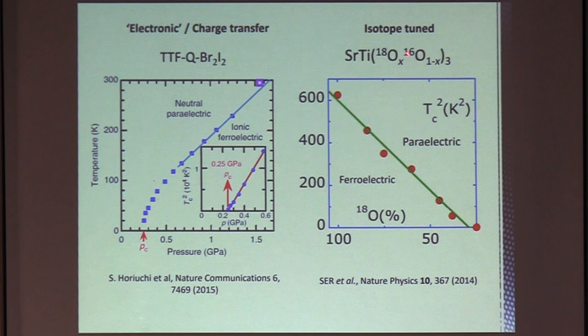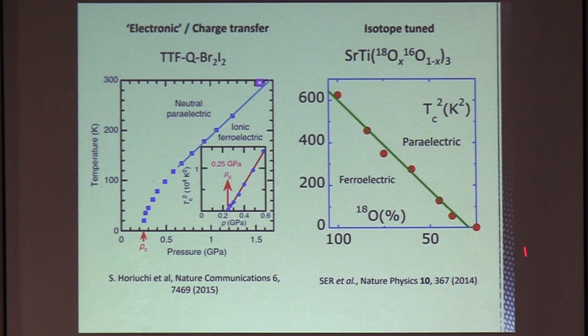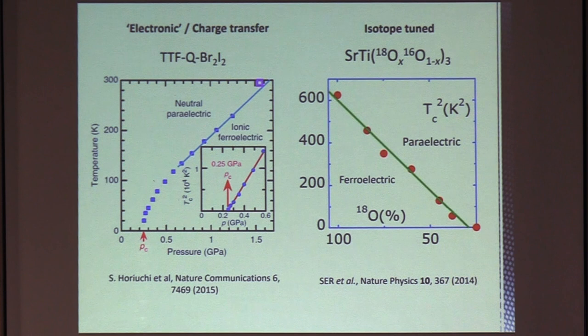This one is an interesting example of strontium titanate, where simply replacing the oxygen 16 with oxygen 18, so just putting a couple of extra neutrons in the nucleus drives the material from a paraelectric to a ferroelectric. And that itself can be tuned back to absolute zero using isotope substitution.